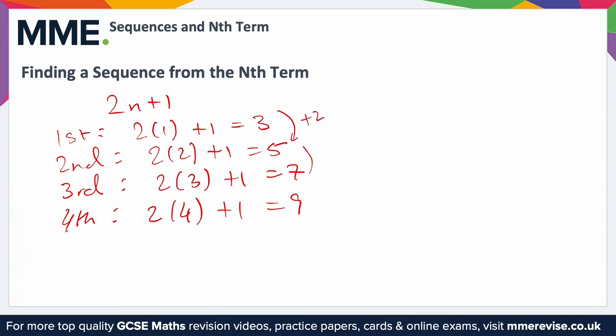Notice how it's going up in twos every time — that's because the number in front of the n is 2. So if I wanted the fifth and sixth terms, I could use that little trick: rather than substituting the whole thing in, I could just add 2 to the previous term. So the fifth would be 11 and the sixth would be 13, adding 2 every single time.